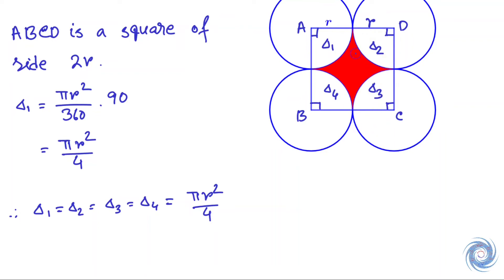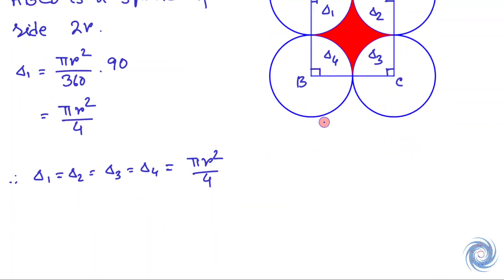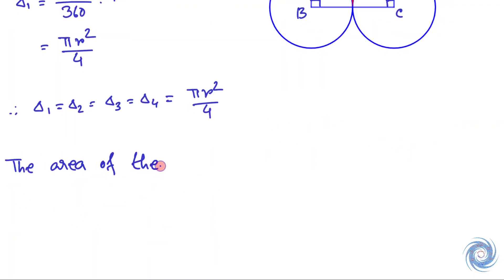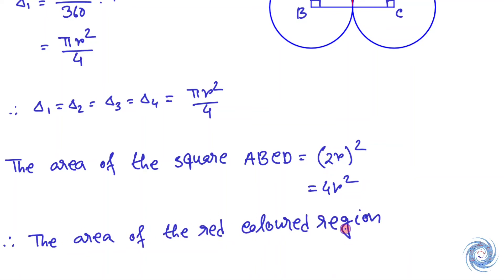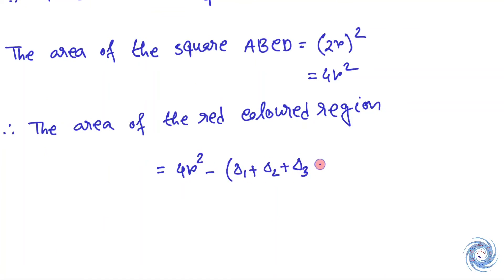Now if we eliminate the area of delta_1 plus delta_2 plus delta_3 plus delta_4 from the area of the square ABCD, then we will get the area of the red colored region. So here the area of the square is 4r². So the area of the red colored region is 4r² minus delta_1 plus delta_2 plus delta_3 plus delta_4. And this gives 4r² minus πr².